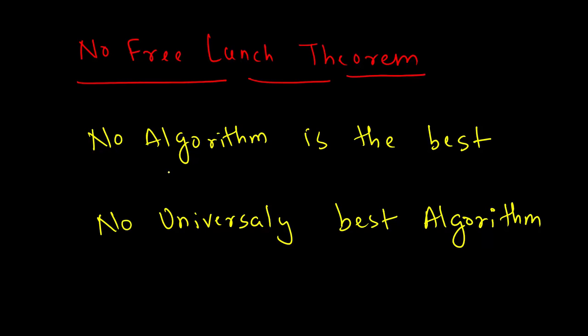So, you cannot say that support vector machine does better prediction than decision tree all the times. It cannot be said like that. There is no mathematical proof of that. So, there is no universally best algorithm.